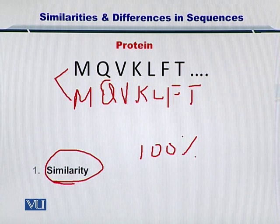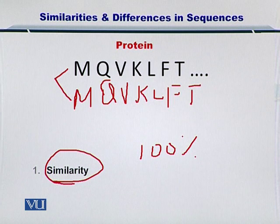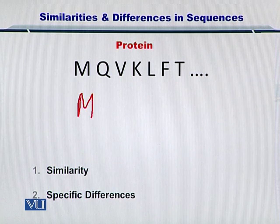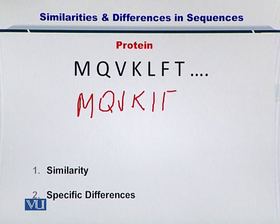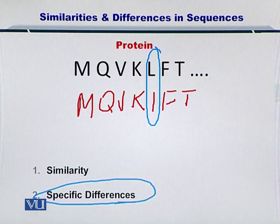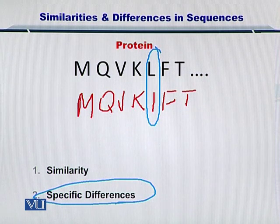However, it can be the case that you are trying to compare two sequences wherein there are differences in their amino acids or nucleotides. For specific differences, if you have another protein sequence, you can argue that there is a difference between the two sequences in leucine and isoleucine. By looking at specific differences, you can see how two sequences differ from each other, and in this case the similarity will obviously be less than 100%.